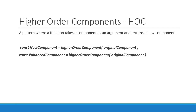If you were to understand this from a non-technical point of view: IRONMAN is equal to WITHSUIT passing in Tony Stark as a parameter. Here, Tony Stark is the original component, WITHSUIT is the function that will enhance Tony Stark and return IRONMAN, which is the Enhanced Component. From a React point of view, we have a function which accepts the original component, adds functionality, and returns an Enhanced Component — in other words, we have the HOC pattern.